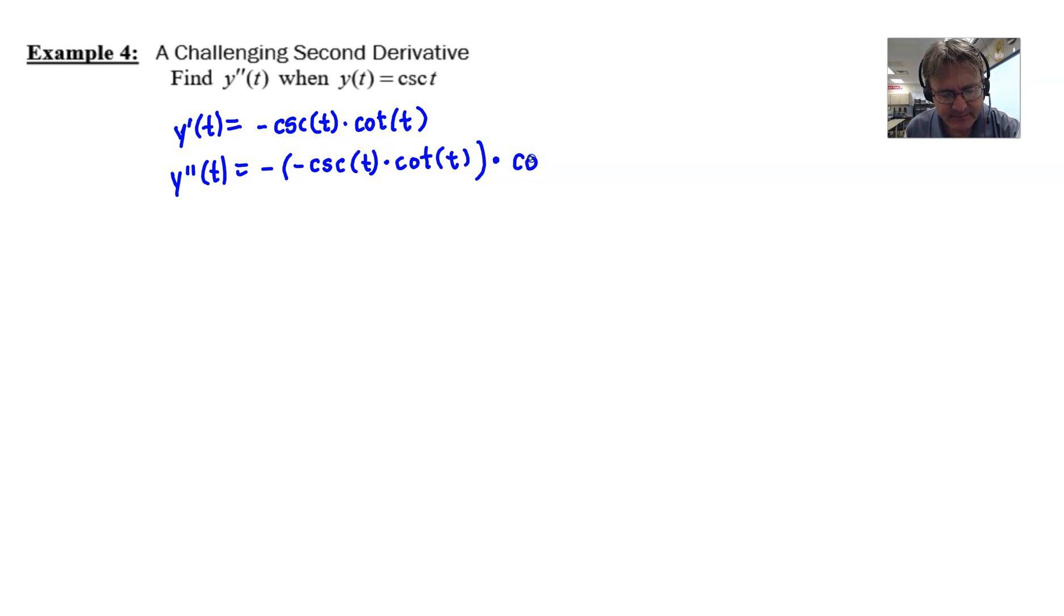That would be multiplied by the second term. According to the product rule, we would then add the first term, negative cosecant of T. And that would be multiplied by the derivative of the last term, the derivative of cotangent, which is negative cosecant squared.